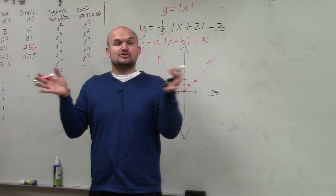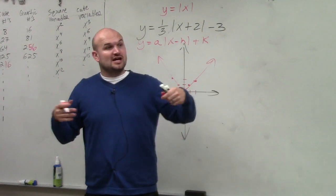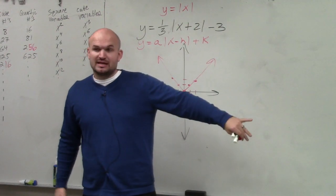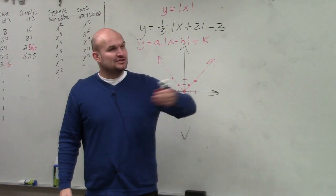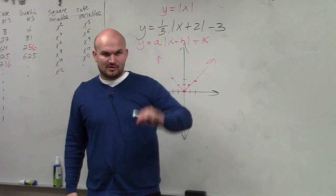a either compresses or stretches the graph. If it's negative, it reflects over the x-axis. h moves the graph left or right, and k shifts the graph up or down.